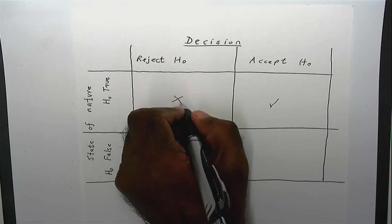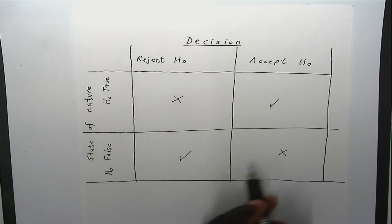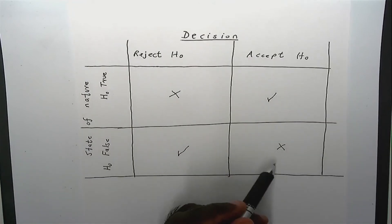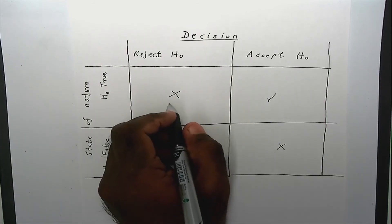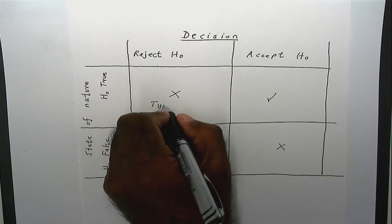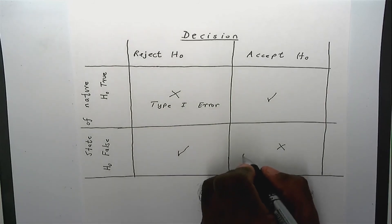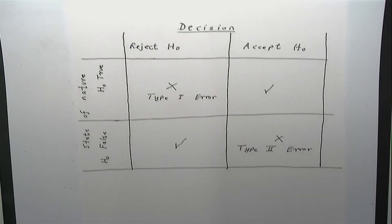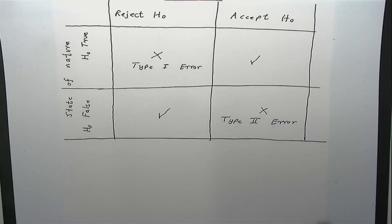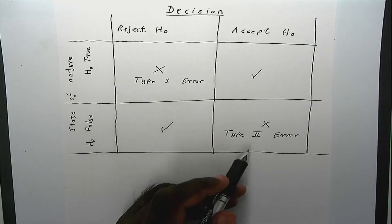The two incorrect outcomes are: H0 is true but we reject it, and H0 is false but we accept it. These are wrong outcomes, but they are bound to happen — any of the four outcomes can occur. The first incorrect outcome is known as the type 1 error, and the second is known as the type 2 error. It doesn't matter how powerful the test is; there is always a possibility you will make a type 1 error or type 2 error, or both.